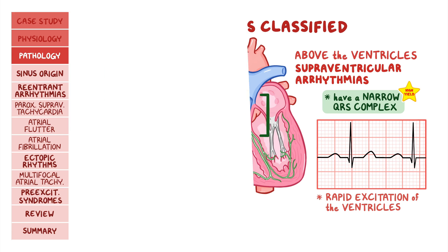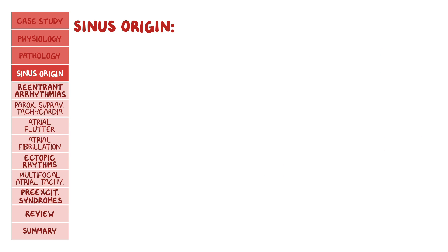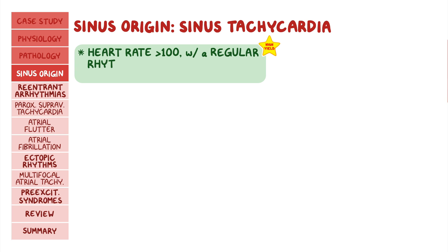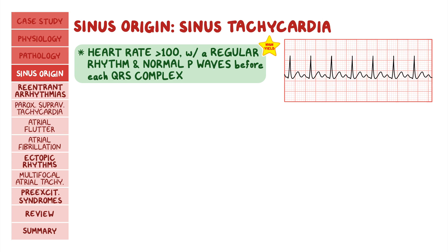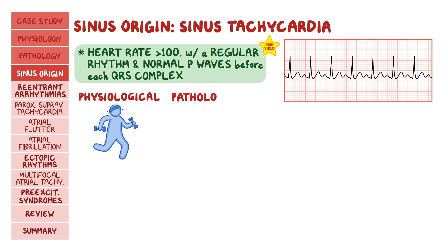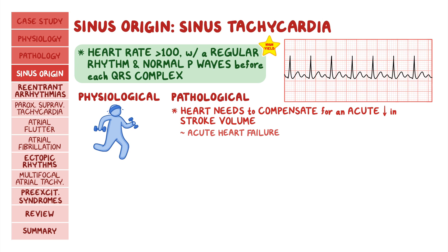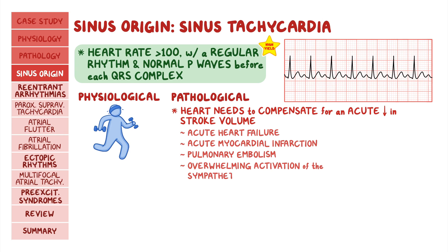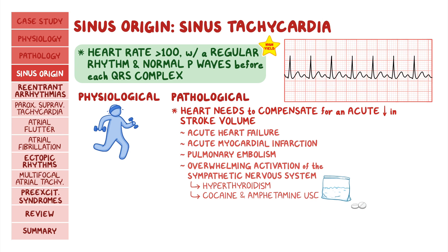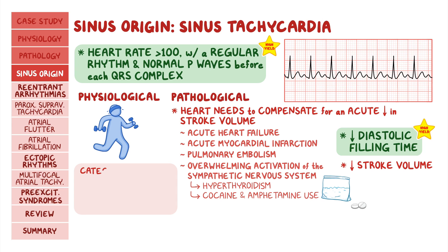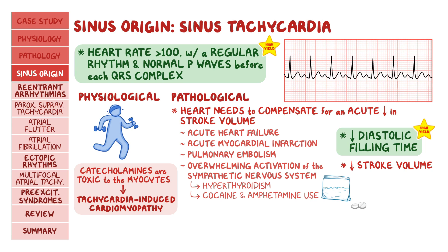The first type of supraventricular arrhythmias includes those with sinus origin. There's sinus tachycardia, which is a heart rate above 100 with a regular rhythm and normal P waves before each QRS complex. It can be physiological, like during exercise, or pathological. Pathological sinus tachycardia happens when the heart needs to compensate for an acute decrease in stroke volume, like in acute heart failure, acute myocardial infarction, or pulmonary embolism. It can also result from any overwhelming activation of the sympathetic nervous system, like in hyperthyroidism or cocaine or amphetamine use. A fast heart rate decreases diastolic filling time, which further decreases the stroke volume. Additionally, over time, catecholamines are actually toxic to the myocytes, which results in a form of cardiomyopathy called tachycardia-induced cardiomyopathy.